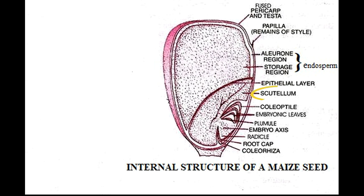Next is the scutellum. The scutellum, meaning small shield, also refers to the equivalent of a thin cotyledon. It is very thin with high surface area and serves to absorb nutrients from the endosperm during germination.